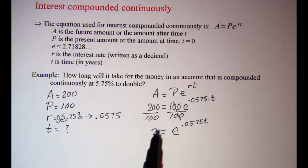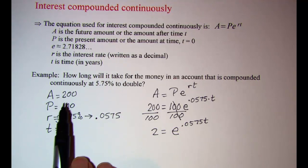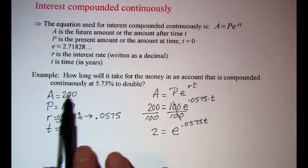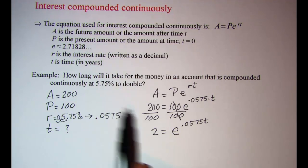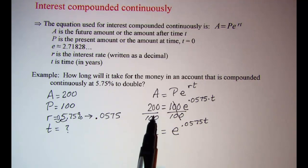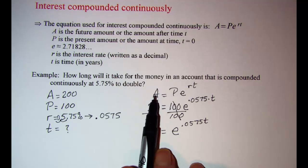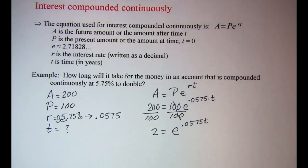Now you'll notice here that if I had let my principal be 1,000, then my future value would have been 2,000, and when I divided it out, it still would have been 2. So it doesn't matter what you put in for your present value, just as long as your future value is 2 times as much, because we're wanting to know how long it'll take to double.